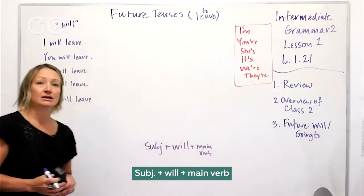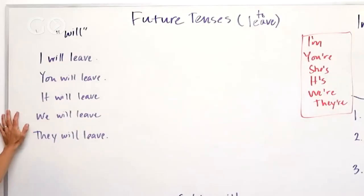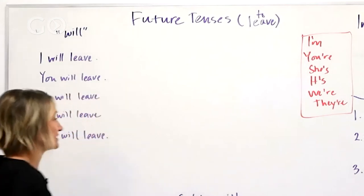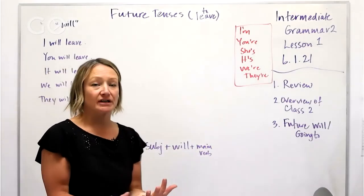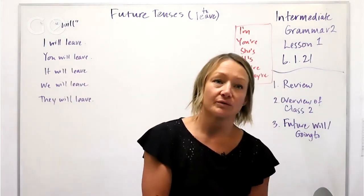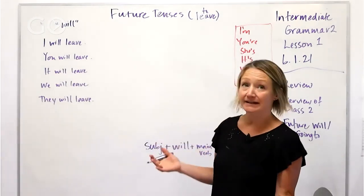...with whatever verb you want. And there's really no irregulars here in this tense, so it's fairly easy to just kind of plow through it. So I will leave, you will leave, it will, she will, he will, we will, and then they will. Okay, let's look at the negatives.